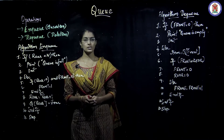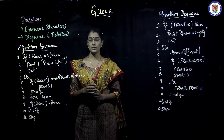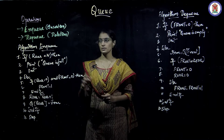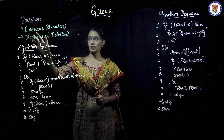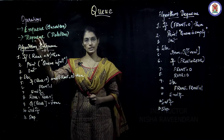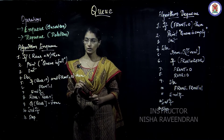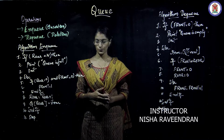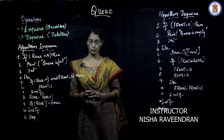Next, we will be looking at the operations of Queue. Mainly, operations in Queue are of two types: insertion and deletion. Insertion can be called as NQ and deletion can be called as DQ. First, let us look at the process of NQ — the NQ algorithm.